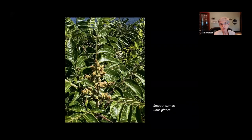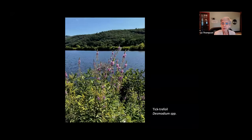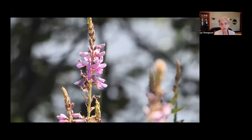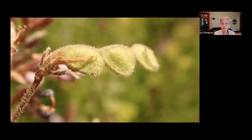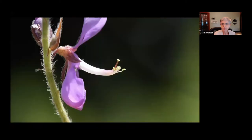Here's staghorn sumac fruit a little later in the season with burr cucumber. Another sumac is smooth sumac. And here's another thing I saw near the smooth sumac back in Brattleboro — tick trefoil. From a distance it might look like purple loosestrife, but it's not — it's a beautiful native plant. There's a close-up with a ladybird beetle on it, and there are its fruits — a little like a pea fruit but with constrictions. It's in the pea family. And this is a different species of tick trefoil.